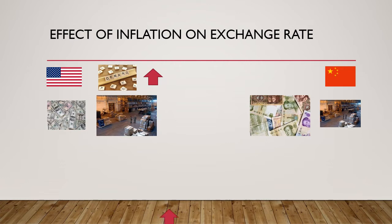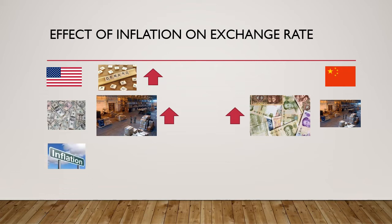Once trade starts with China, goods and services in the American economy increase even as the money supply or credit in the American economy remains the same or may even decline slightly. On the contrary, the supply of credit or money supply in China rises, since China ships goods to America and in return takes dollars from America, thus increasing its domestic money supply. Because of this, inflation in America declines while inflation in China rises — more money in China is chasing the same amount of goods, while the same amount of money in America is chasing more goods.